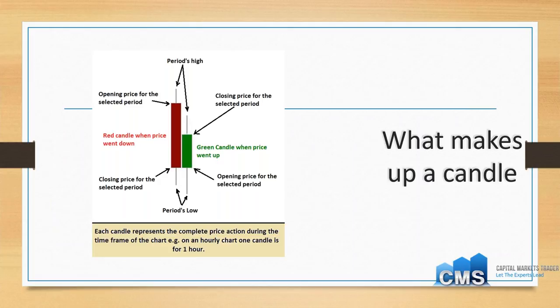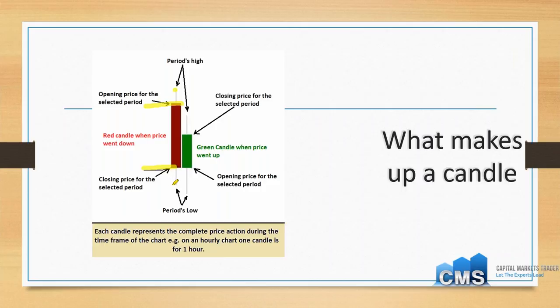Each candlestick represents a period of time and how price moves in that period. If you're looking at a one-hour chart, each candlestick represents one hour of price movement; on a one-day chart, each candlestick represents the entire day. On a one-hour chart, at the beginning of that hour we draw a line across at the open, then at the end of that hour we draw a line across at the close. We put a dot at the highest price that asset reached in that hour and a dot at the lowest price, then connect those dots to the open and close and fill in the body of the candle.